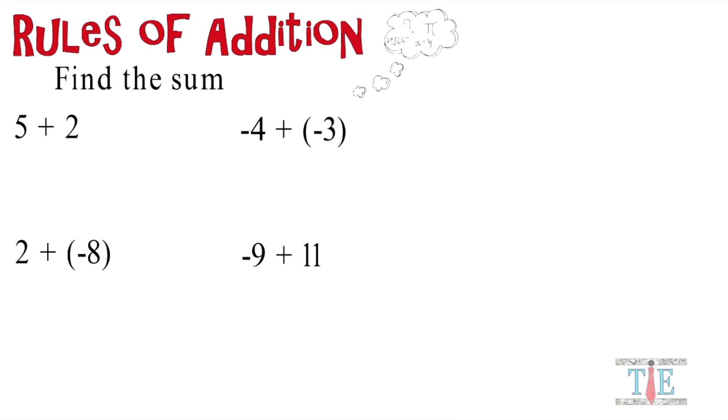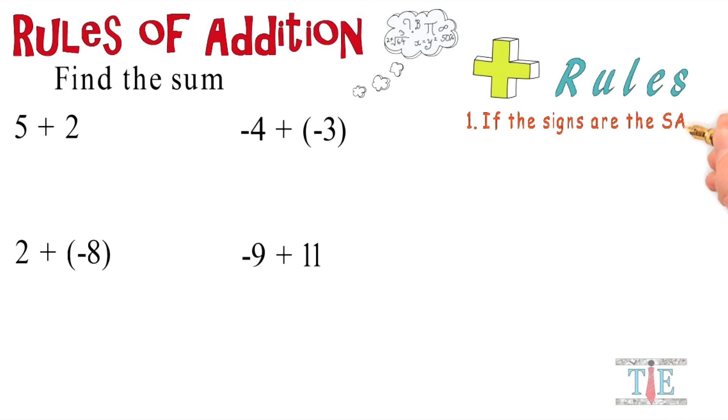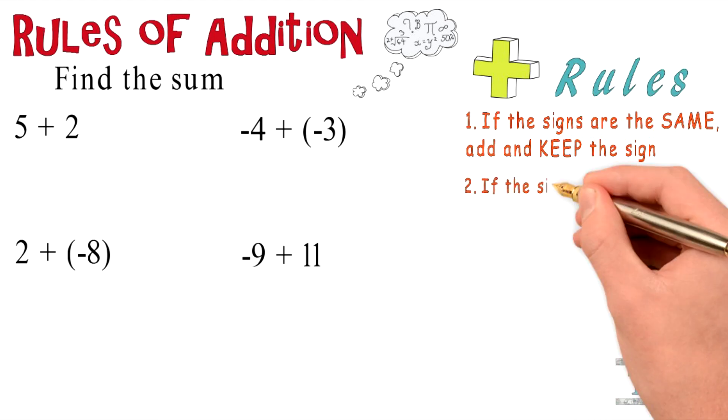If you get stuck, here are a couple rules of addition to help you out. These are the rules of addition: First, if the signs are the same, add and keep the sign. Number two, if the signs are different, subtract the smaller number and keep the sign of the larger number.